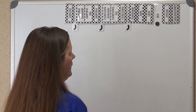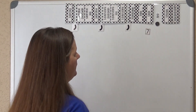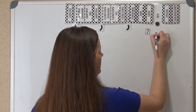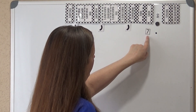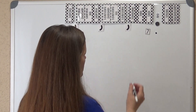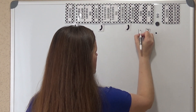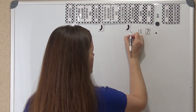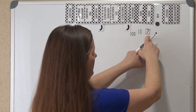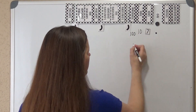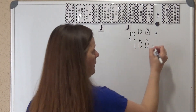We'll go to 7 ones. If I have 7 ones — because this would be tens and this would be hundreds — if I multiply 7 ones times 100, that's going to give me $700.